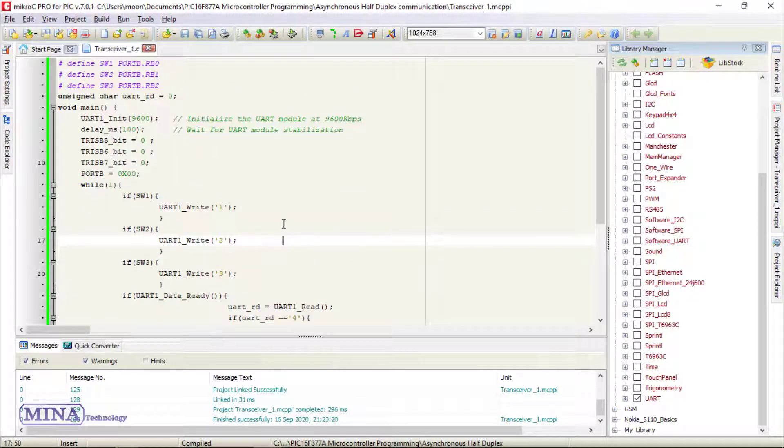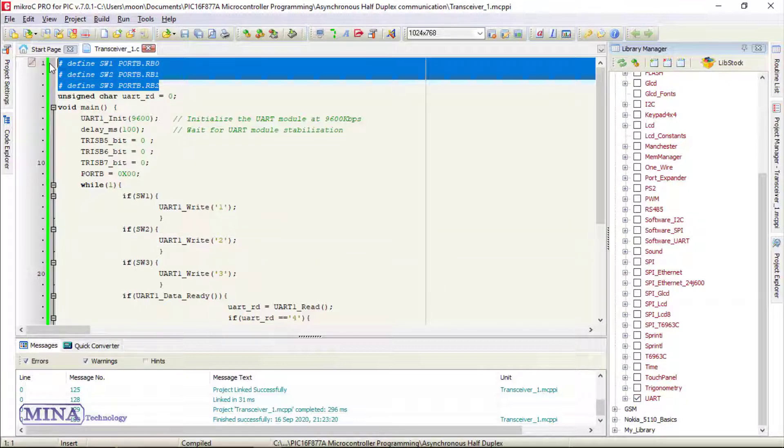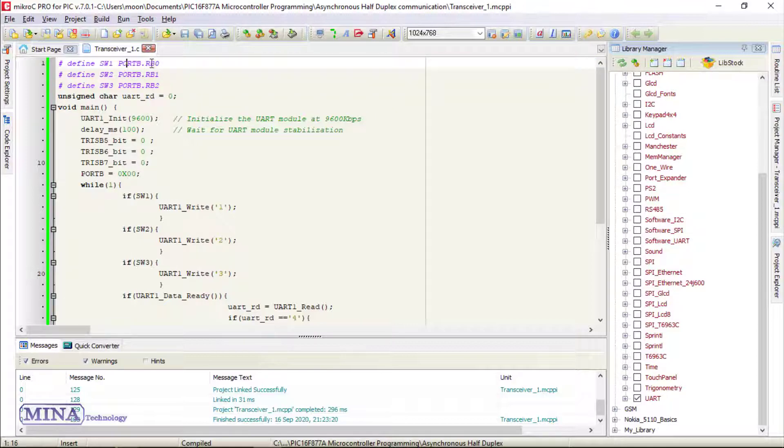Here's the MikroC code for first microcontroller. In this code, we have included the UART library. In define section, we have defined the switch connections. In this case, switch 1, 2, and 3 are serially connected to RB0, RB1, and RB2 pins.